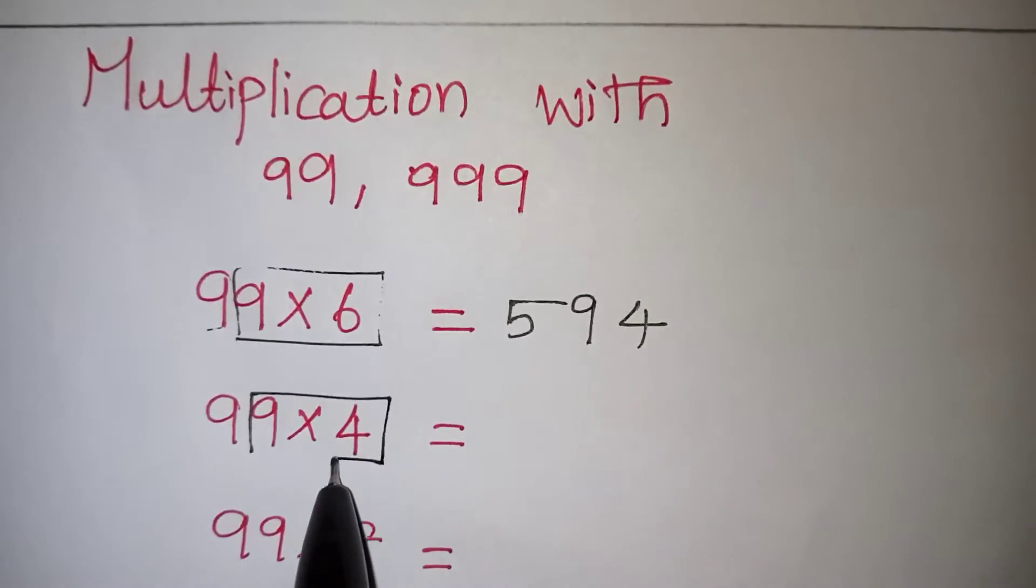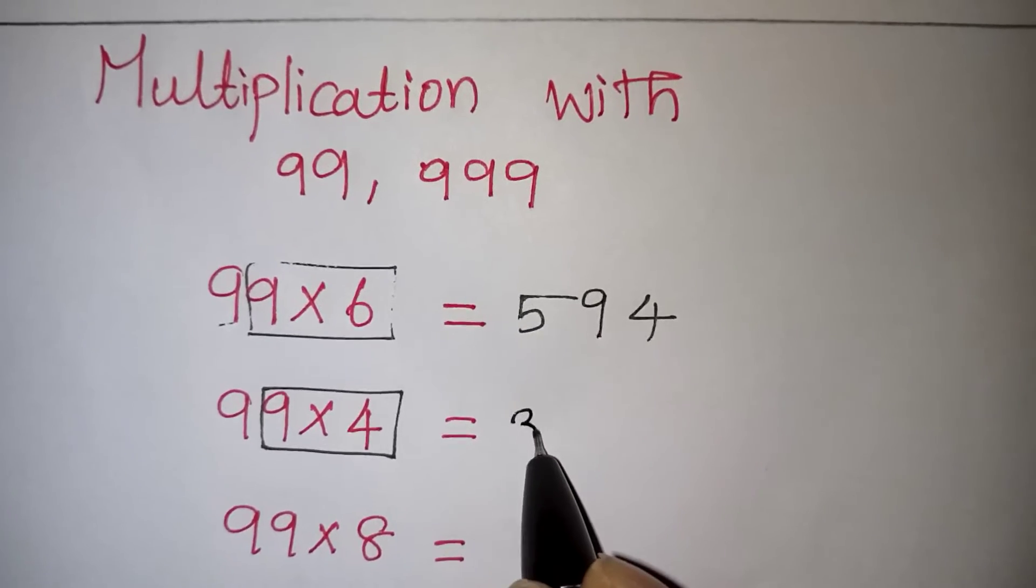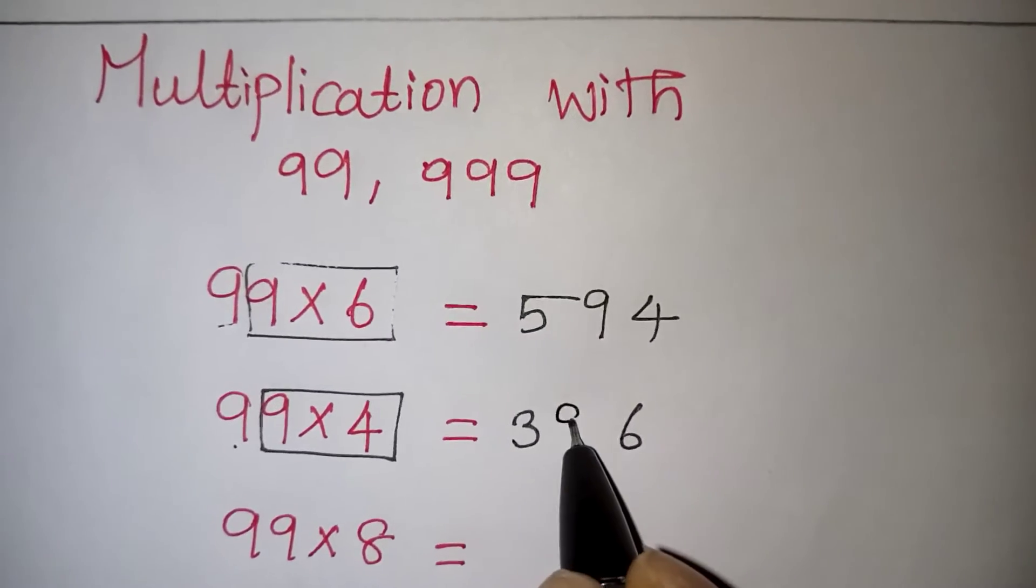Now here 9 times 4. So 9 times 4 is 36. Write the 3 here and 6 here. One 9 is pending, that 9 should be written here.